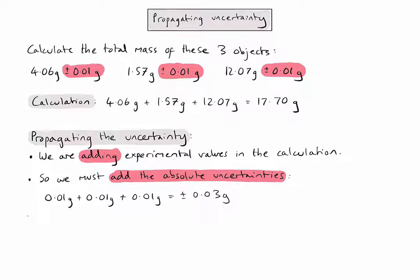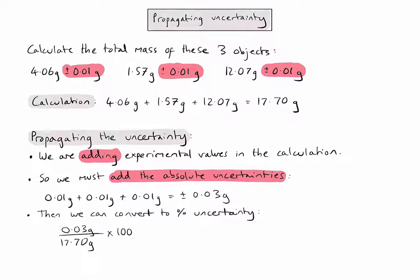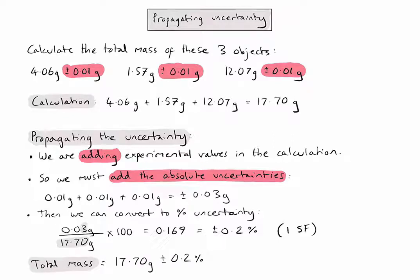However, in most cases in a lab report, it's more useful to express the uncertainty as a percentage uncertainty, so I need to use the following formula. Because in this calculation we are doing multiplication and division, I need to give my answer to an appropriate number of significant figures — one significant figure in the top number and four in the bottom, so the answer is given to one significant figure. Finally, the total mass can be presented as 17.70 plus or minus 0.2%, which gives a nice indication of the impact of uncertainty. In this case, the percentage uncertainty looks very small.